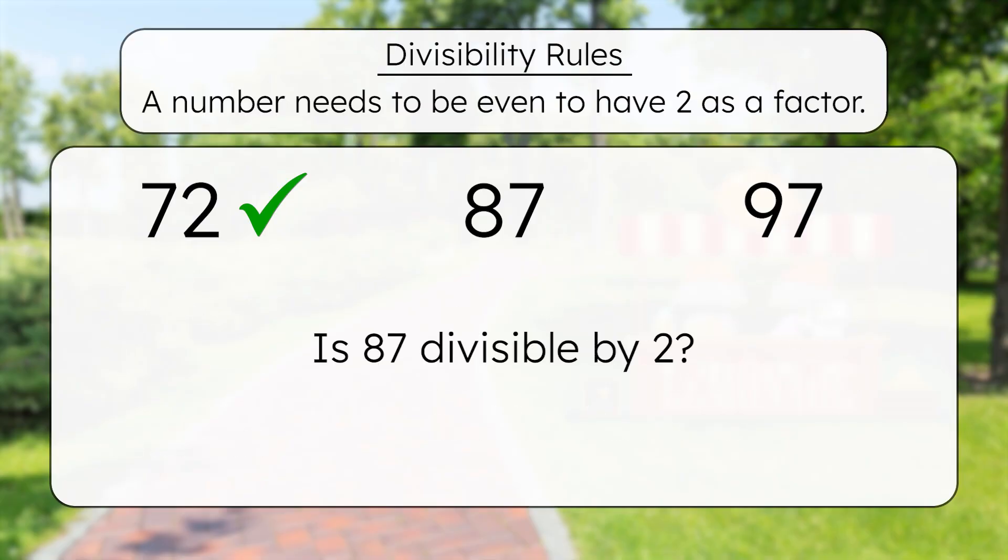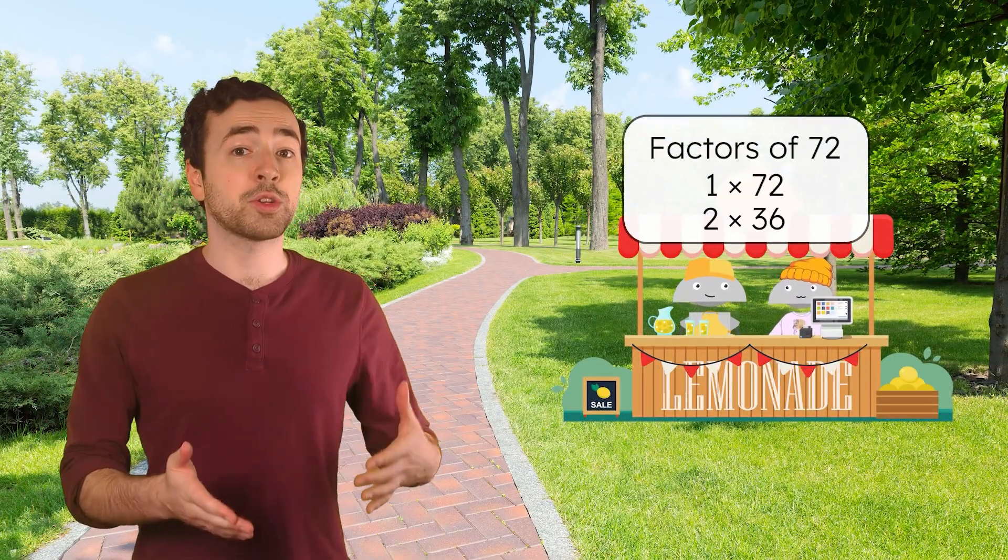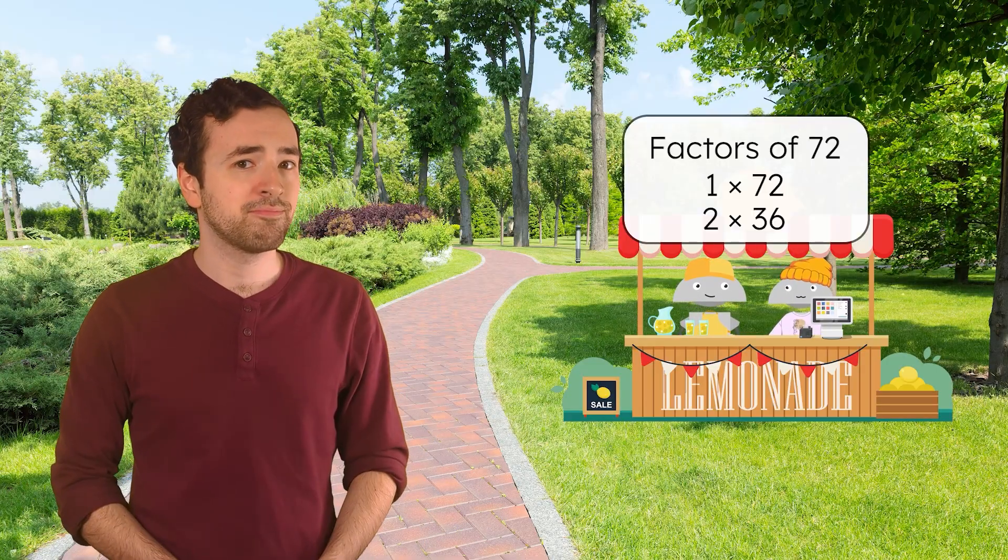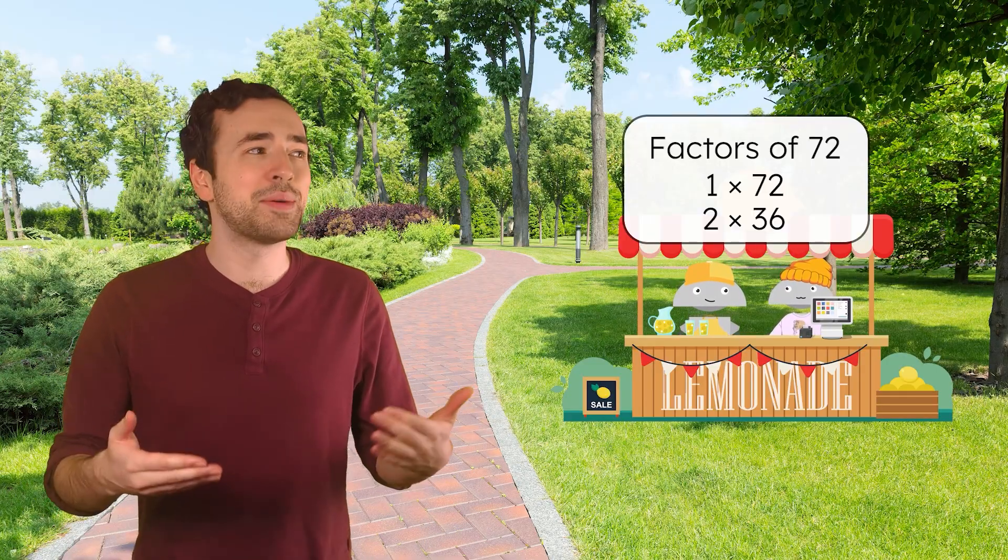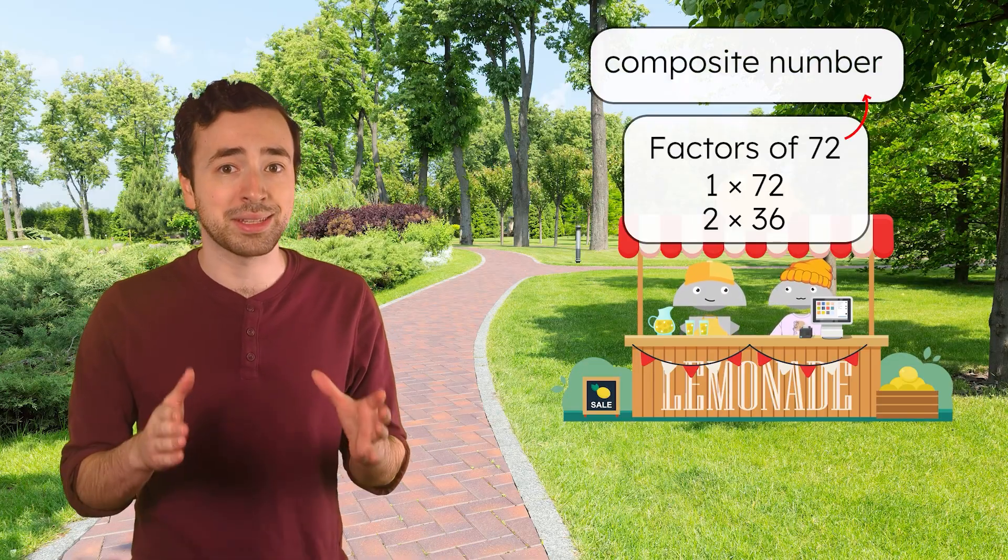Is 87 divisible by 2? Nope, 87 is odd, so 2 is not a factor. And 97? Also odd. 2 is only a factor of 72 in this list. But we know something more than we did before. Since 2 is also a factor of 72, does that make it prime or composite? Since it has more than 2 factors, 72 is a composite number.